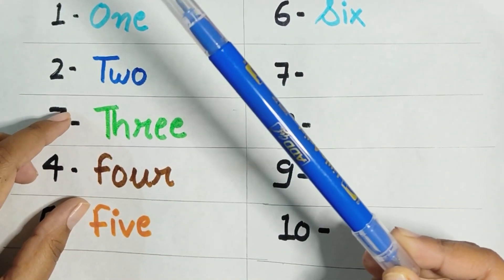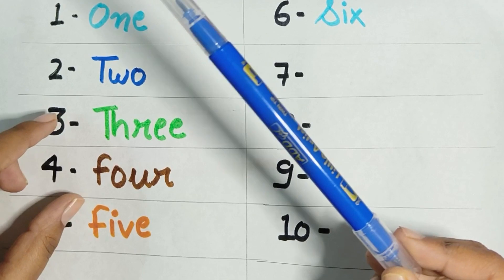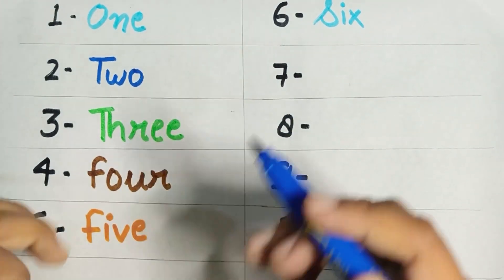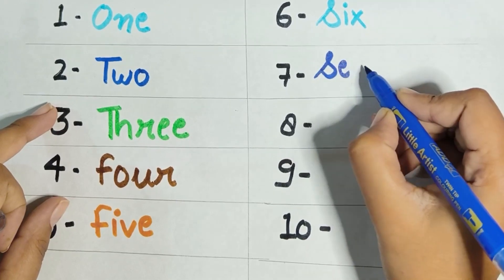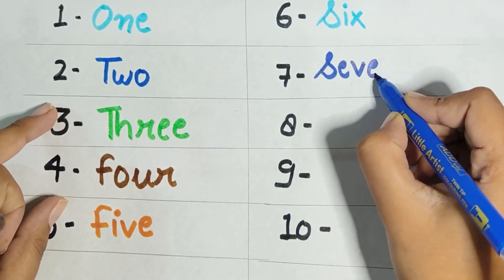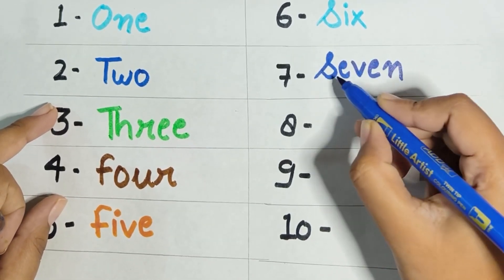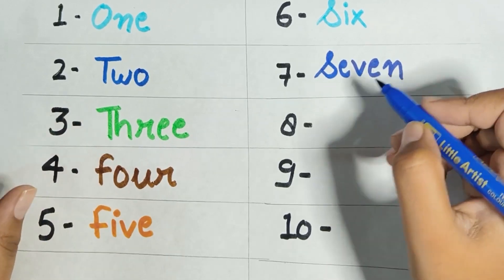Tell me the name of this color. This is dark blue color. S-E-V-E-N, seven.